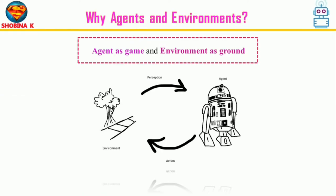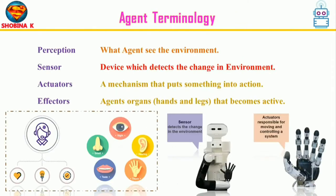Agent and environment are the two pillars in artificial intelligence. Our aim is to build intelligent agents that work in an environment. Broadly speaking, the agent is a solution and the environment is the problem. In simple terms, think of agent as a game and environment as the ground.